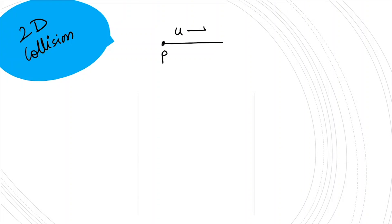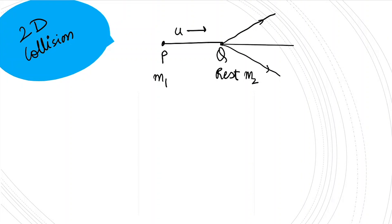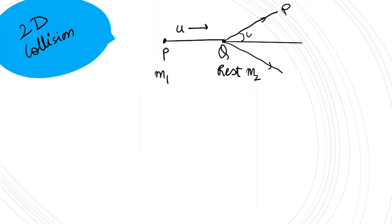We have particle P moving with mass m1 and particle Q at rest with mass m2. After collision, the particles move in these directions — P making an angle theta with its initial direction, and Q making an angle phi with the initial direction of P. Let the velocity after collision of P be v1 and of Q be v2.